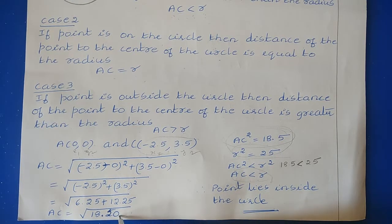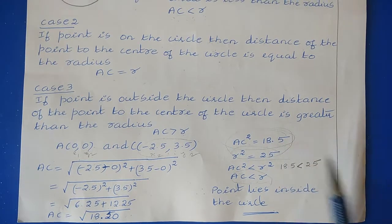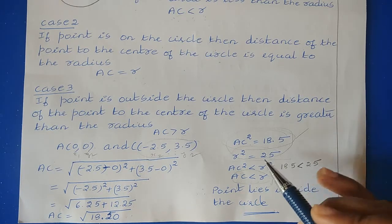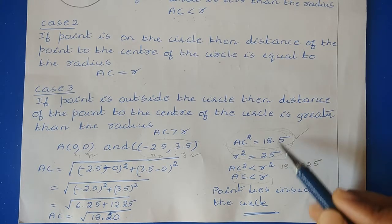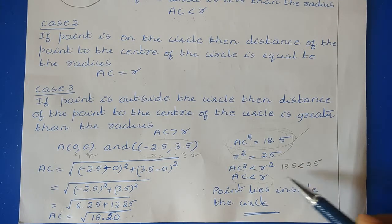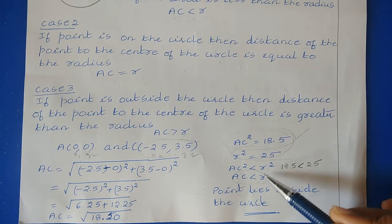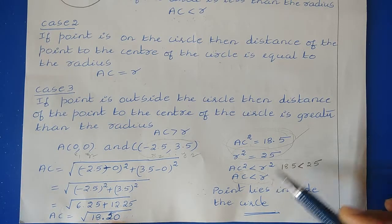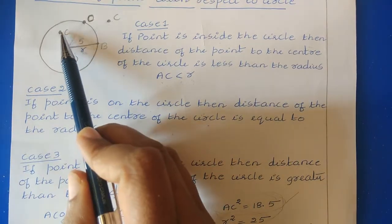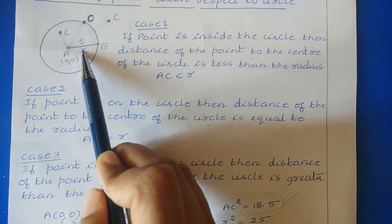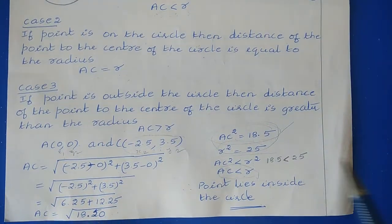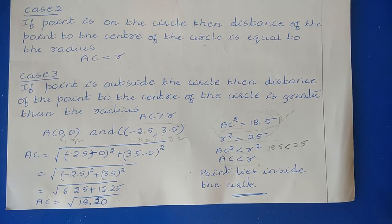So AC = √18.5, meaning AC² = 18.5. From the circle equation, r² = 25. Comparing, r² = 25 is greater than AC² = 18.5, so r is greater than AC. Since the radius is greater than the distance from the point to the center, the point (−2.5, 3.5) lies inside the circle. Thanks for watching.